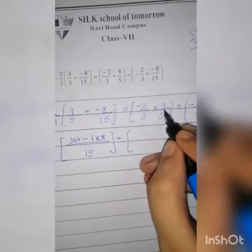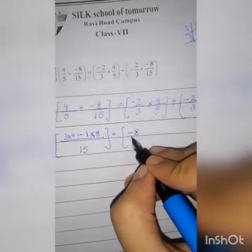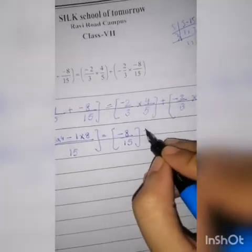Minus 2 over 3 multiply by 4. So we have to multiply: 2 times 4 is 8, and 5 times 3 is 15, then plus.